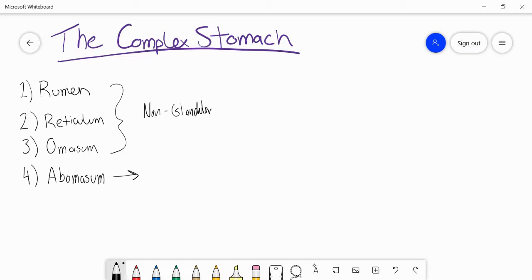The abomasum, on the other hand, this is glandular, and this is much more similar to the type of stomach that we as omnivores, us humans, have.